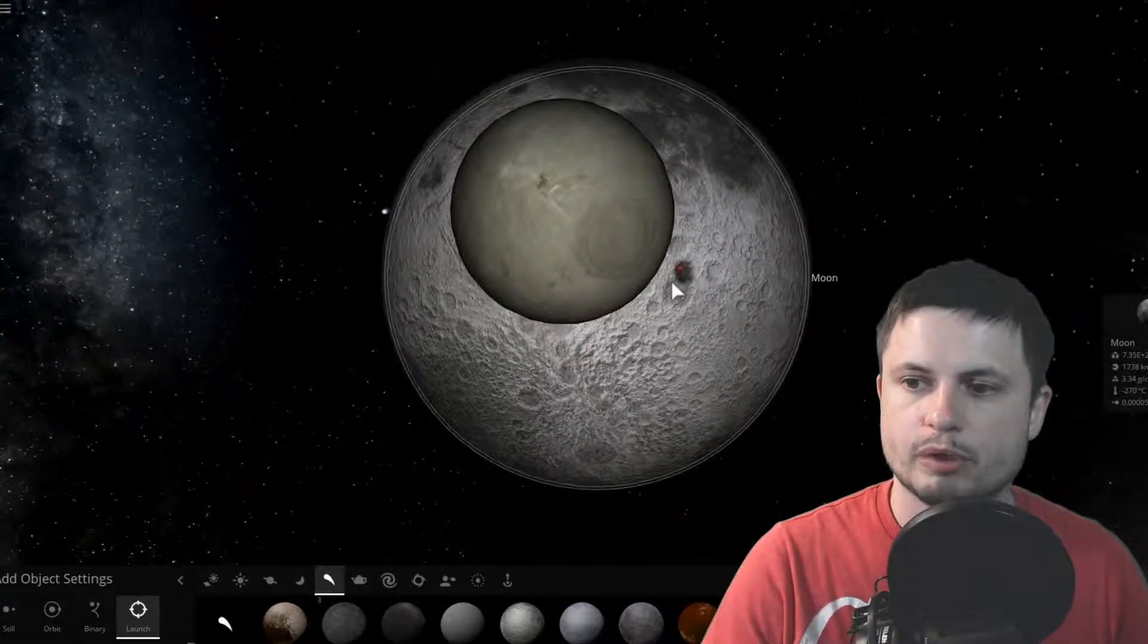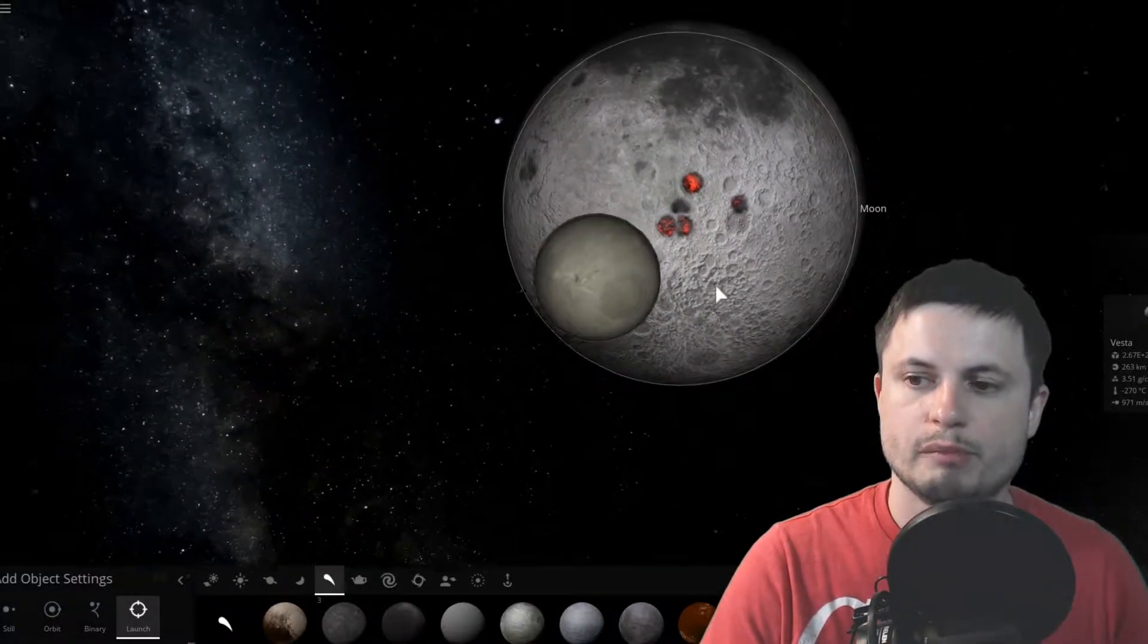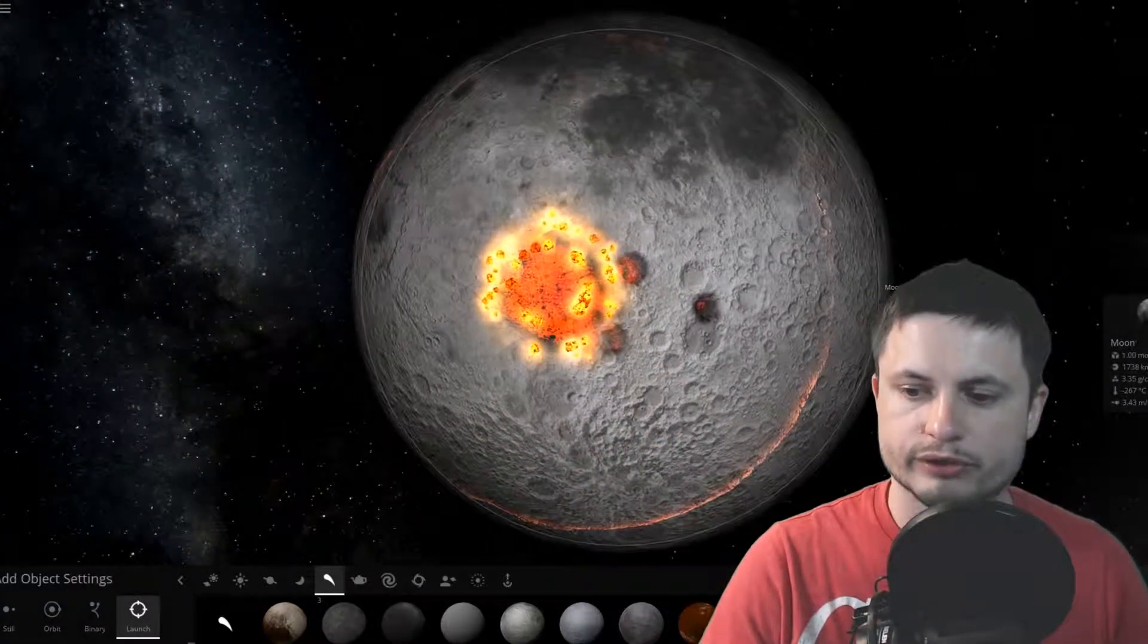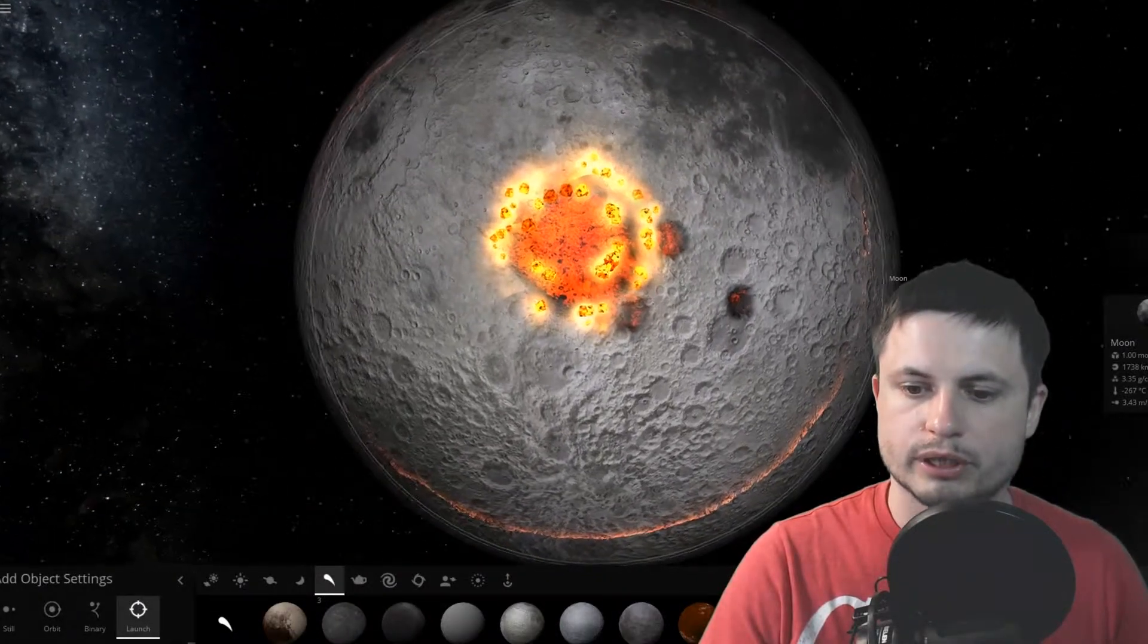It was actually something that was probably around the size of Vesta. Approximately 250 to maybe even 300 kilometers in radius. So a really large object.